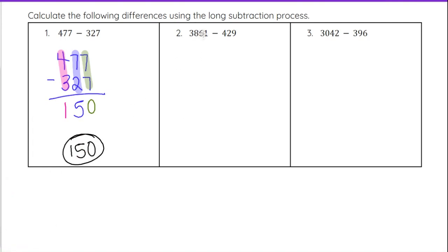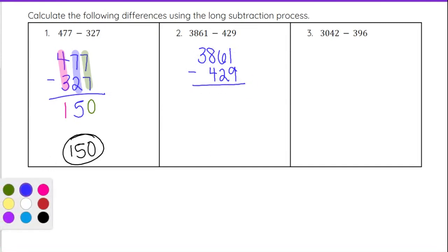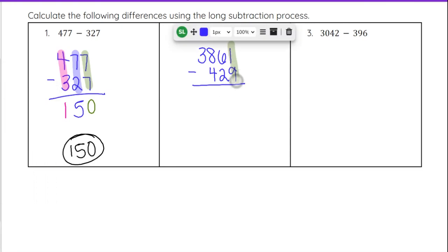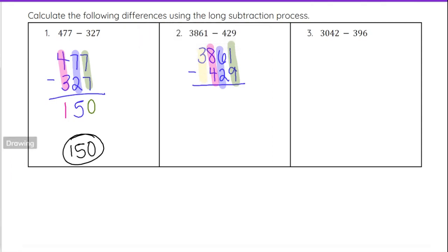On number 2, we have 3861 minus 429. We start with 3861 and subtract 429. Notice when I line this up, I put 429 so that it is in line vertically with its corresponding digits above. The 9 is in the ones column, the 2 is in the tens column, and the 4 is in the hundreds column. We will look at our ones column, tens column, hundreds, and then a thousands column with only one number in it.